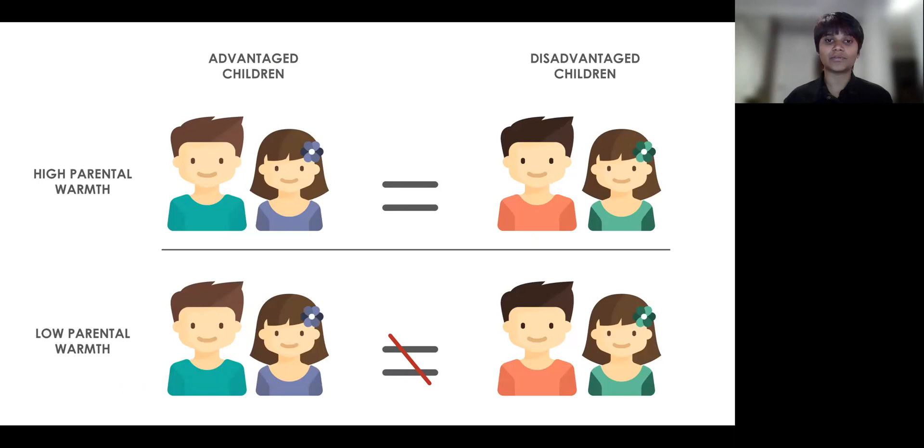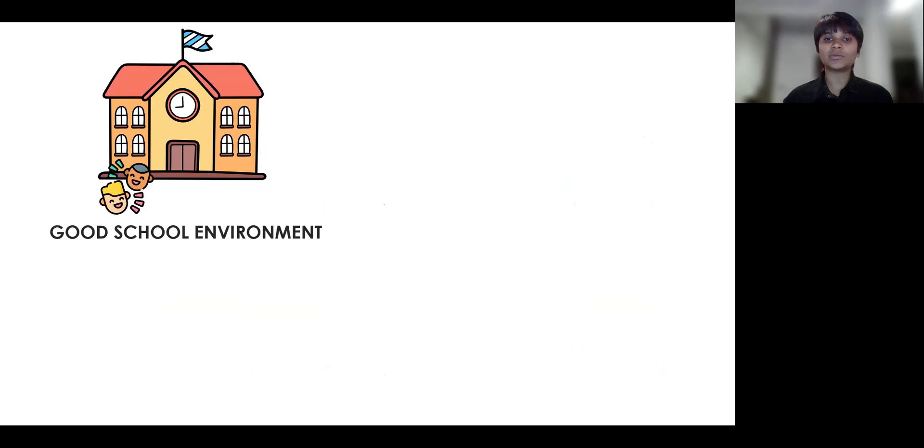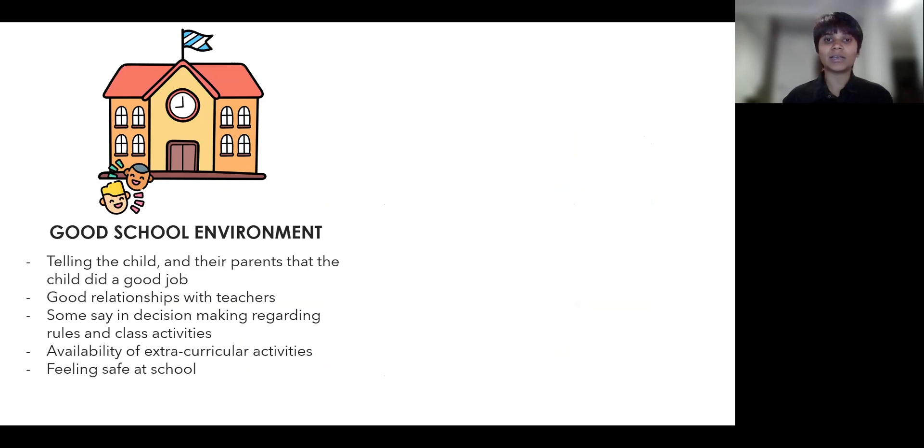A similar pattern was found for school environments. A good school environment in our study entailed telling the child and their parents that the child did a good job, good relationships with teachers, some say in decision making regarding class rules and activities, availability of extracurricular activities and feeling safe at school.